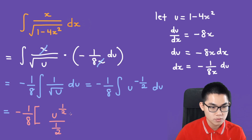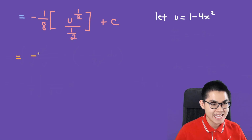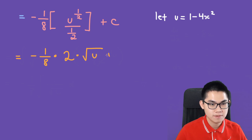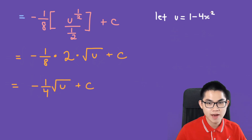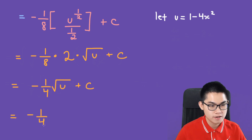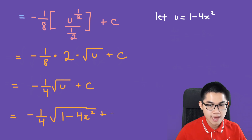We have negative 1 over 8 times u to the power of 1 over 2, divided by 1 over 2, plus C. This is the same as negative 1 over 8 times 2 times the square root of u plus C, which simplifies to negative 1 over 4 times the square root of u plus C. Substituting back, the final answer is negative 1 over 4 times the square root of 1 minus 4x squared plus C.